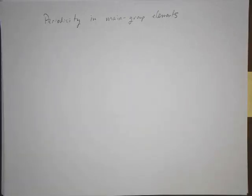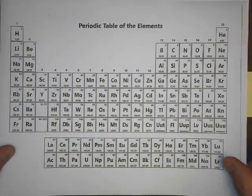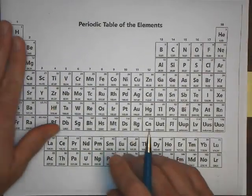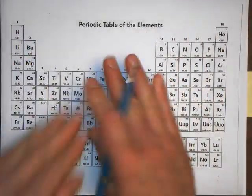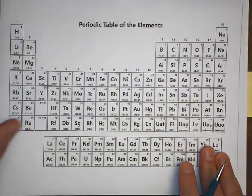The next topic, or the last topic we're going to look at with respect to electron configurations and periodicity, is periodicity in the main group elements. The main group elements are anything not a transition metal or a lanthanide and actinide.